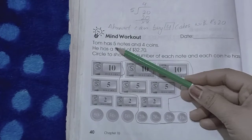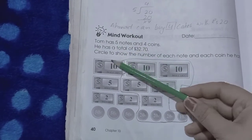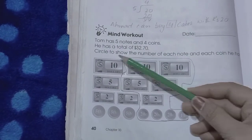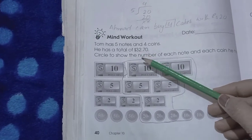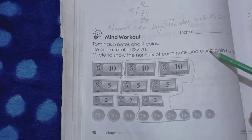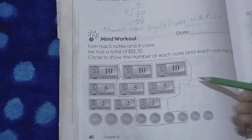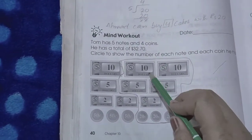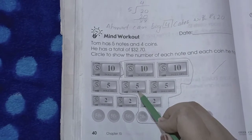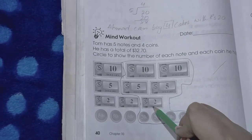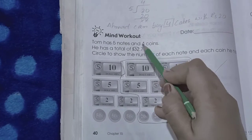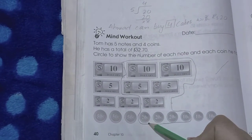Now here we have the mind workout. Tom has five notes and four coins. He has a total of $32.70. Circle to show the numbers of each note and each coin he has. So I have circled 10 plus 10, 20, 20 plus 5, 25, 30, 32, 32 dollars. Now 70 cents: 20, 20, 20, 60, 60 plus 10 is 70. So 32 dollars 70 cents.